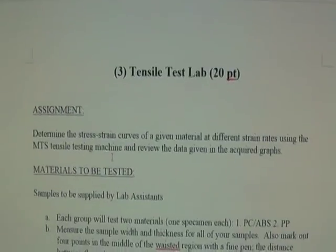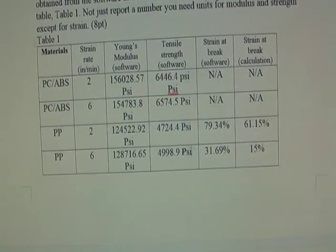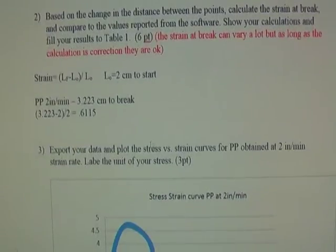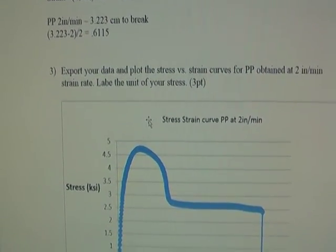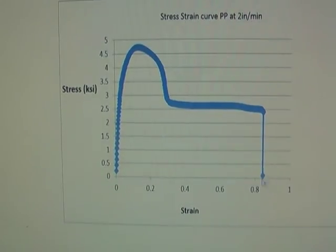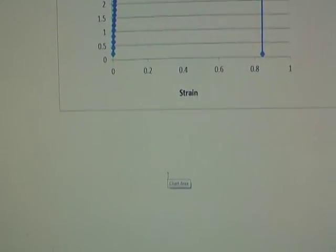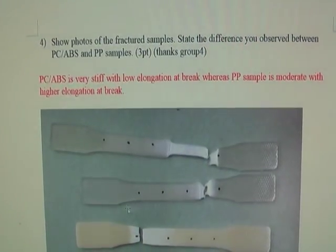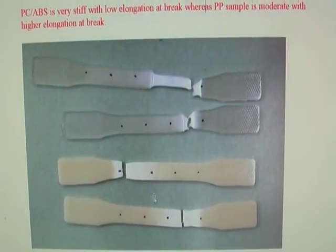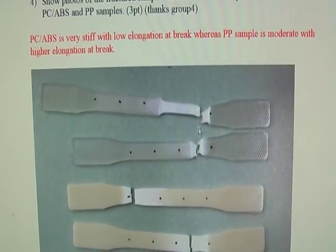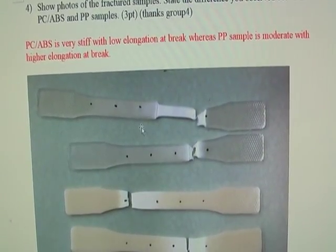The last portion of Lab 2 is the tensile test. When you report the Young's modulus or tensile strength, you must include units — note that psi is different from ksi. You also need to calculate the strength and elongation at break using the equation provided. For the stress-strain plot, make sure you plot stress versus strain — not strain versus strength — and include units on your variables. When comparing PCABS and polypropylene specimens after break, PCABS appears brittle with low elongation, while polypropylene is more moderate with slightly higher elongation at break.